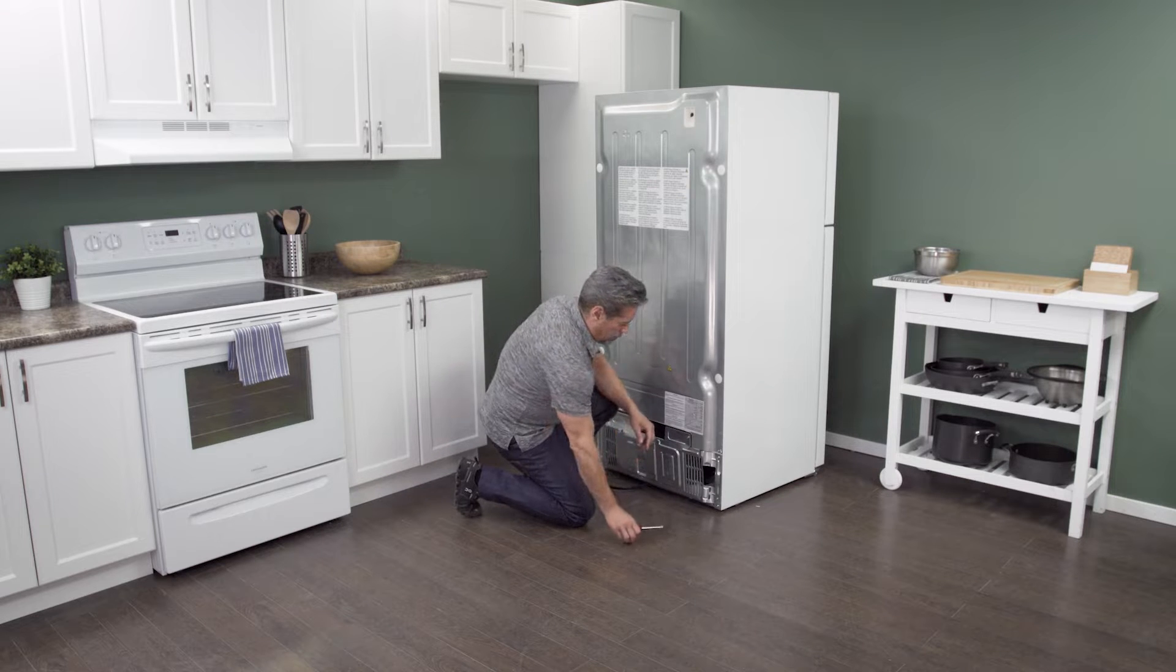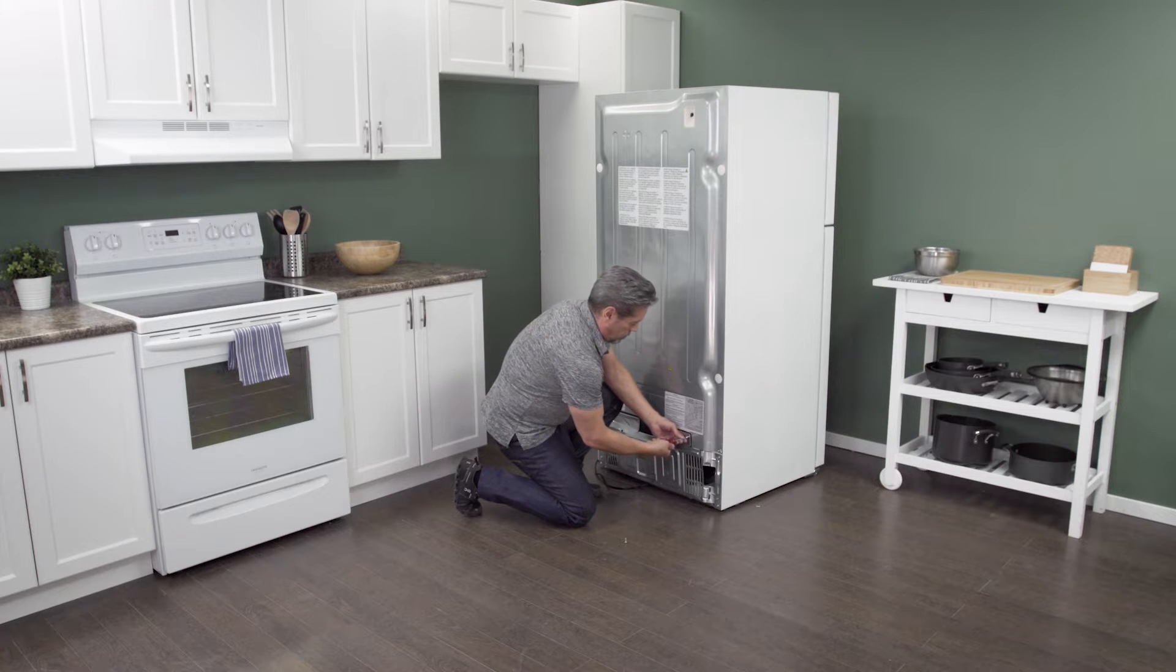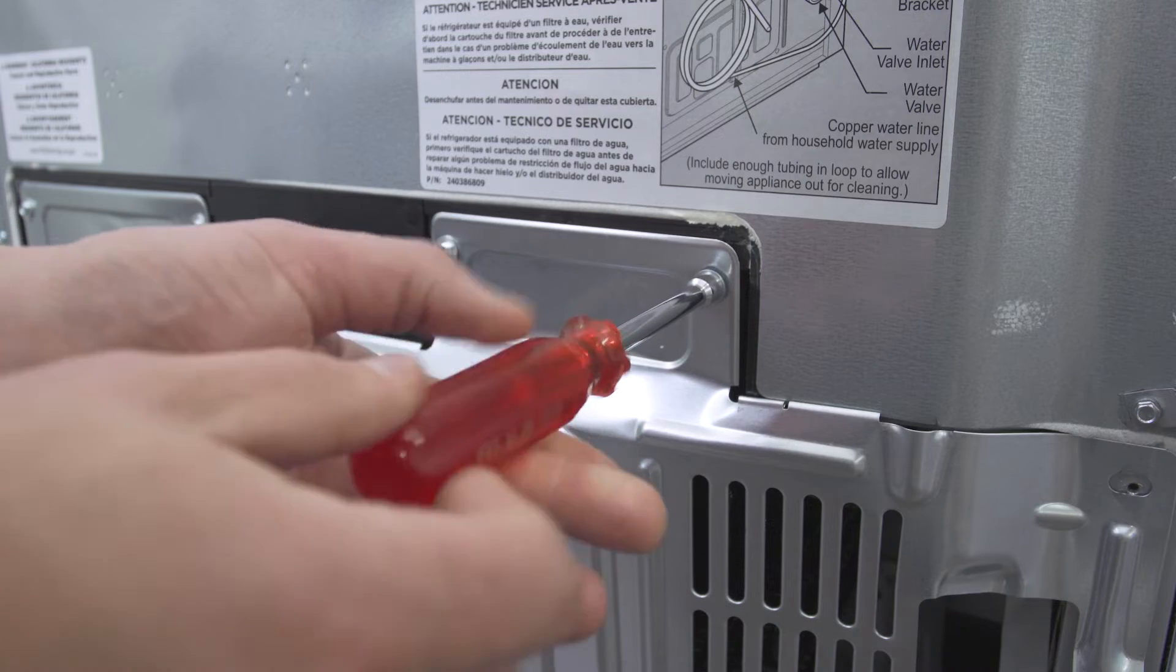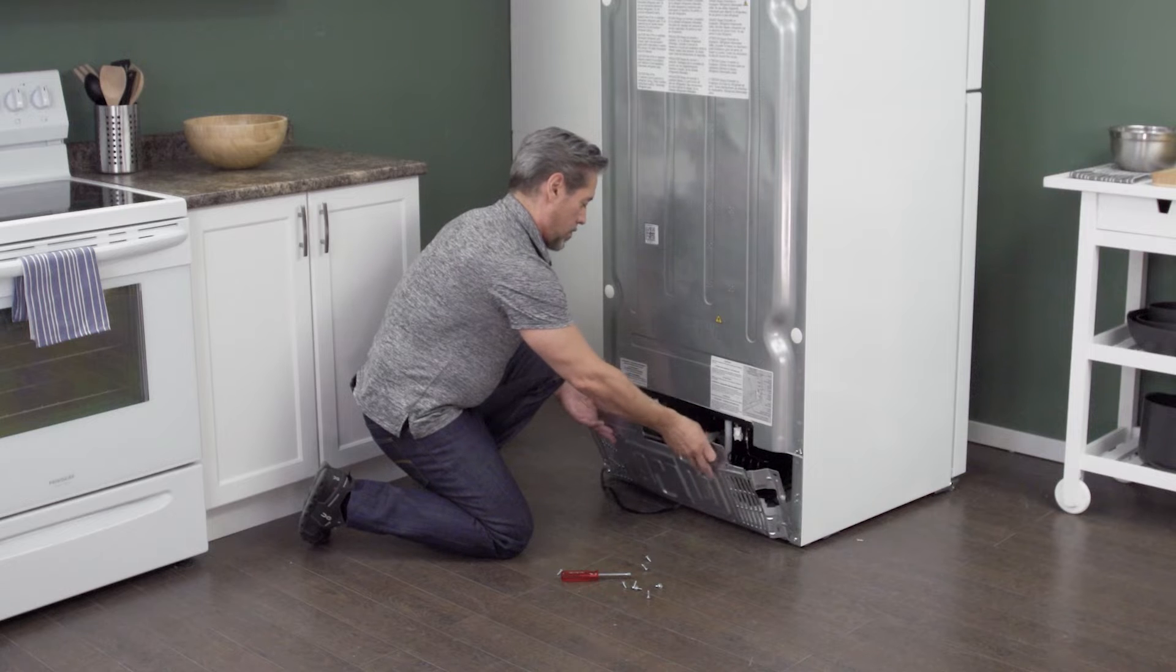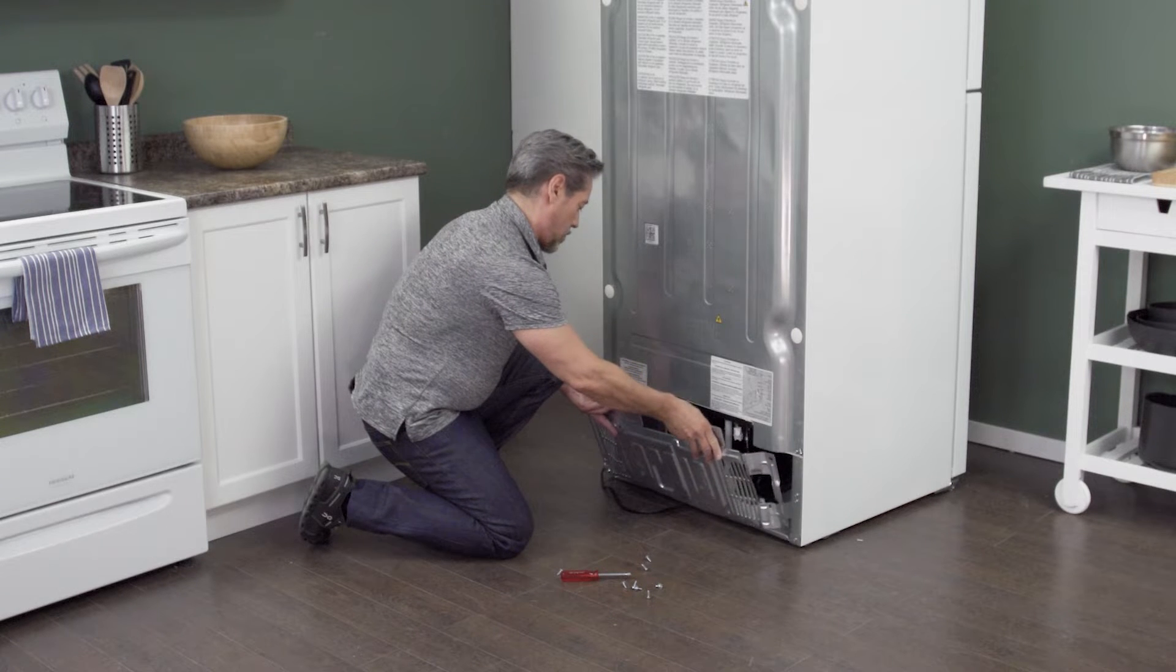On the back of the refrigerator is an access panel. Use a quarter inch nut driver to remove the screws. Now simply lift up to remove the panel.